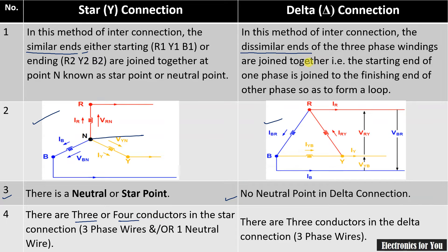Whereas in case of delta connection, only three conductors are used, and therefore it only has three phases in the connection.